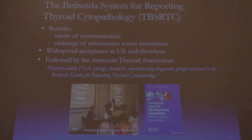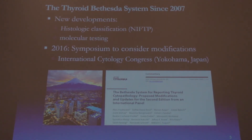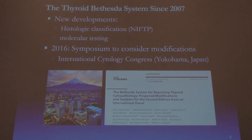The Bethesda system has been endorsed by the American Thyroid Association, which essentially recommends that thyroid cytopathology in the U.S. be reported using the Bethesda system categories. But things never stay the same. There have been advances in both molecular testing and histopathologic terminology, as we just heard from Dr. Nikiforov, that have very significant implications for cytology interpretation. So we took advantage of an international congress in Yokohama last year to put together a symposium: what has worked so far, what can we keep, and what should we consider changing for a second edition?